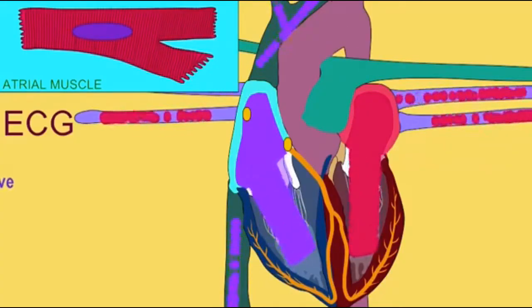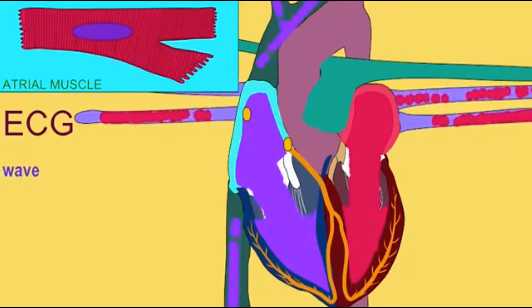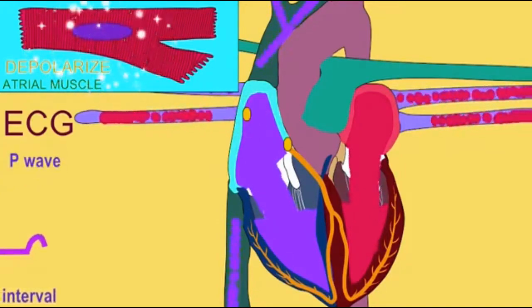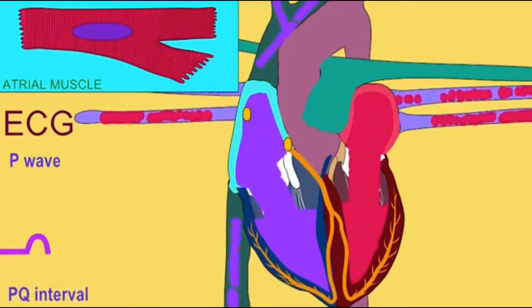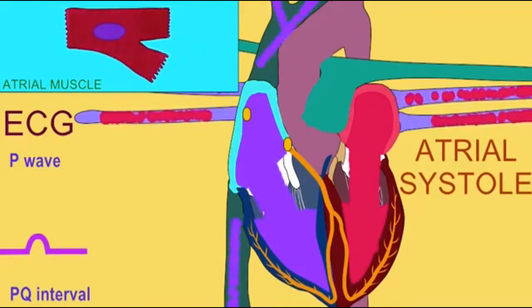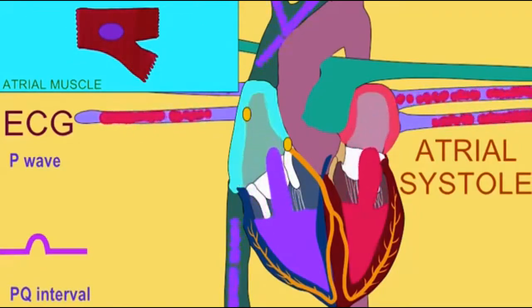Shortly after the T-wave of the previous cardiac cycle, the high pressure in the atria forces the atrioventricular valves open against the low pressure of the ventricles, and then the ventricles can begin to fill.